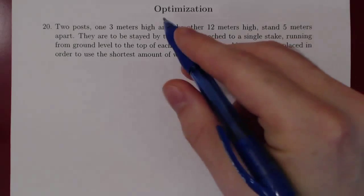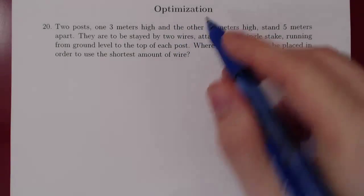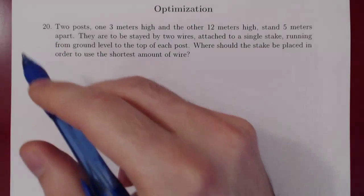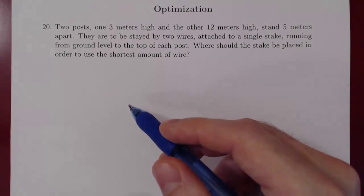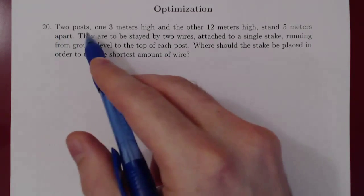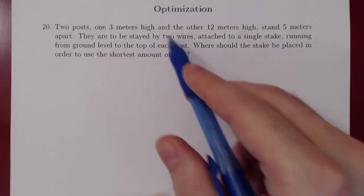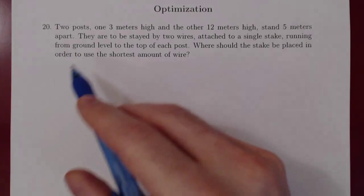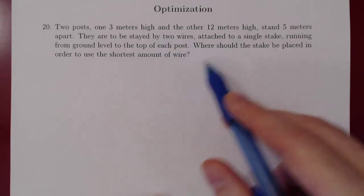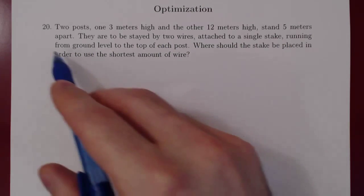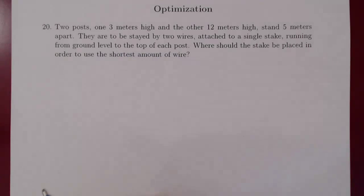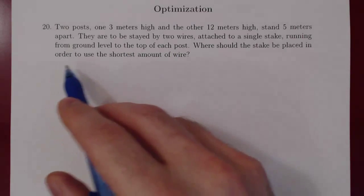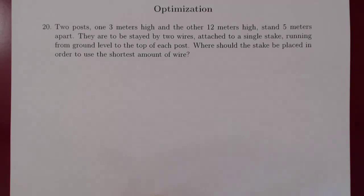This is our fifth problem of optimization. If you look at the problem sheet on optimization, this is problem number 20. Let's read the problem. Two posts, one 3 meters high and the other 12 meters high, stand 5 meters apart. They are to be stayed by two wires attached to a single stake, running from ground level to the top of each post. Where should this stake be placed in order to use the shortest amount of wire?